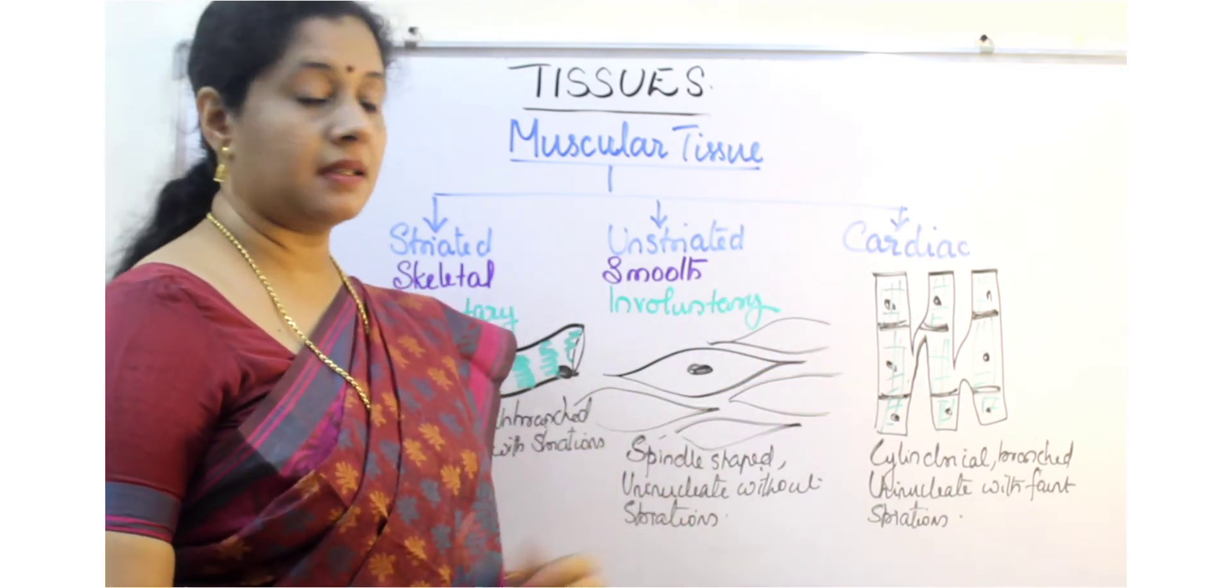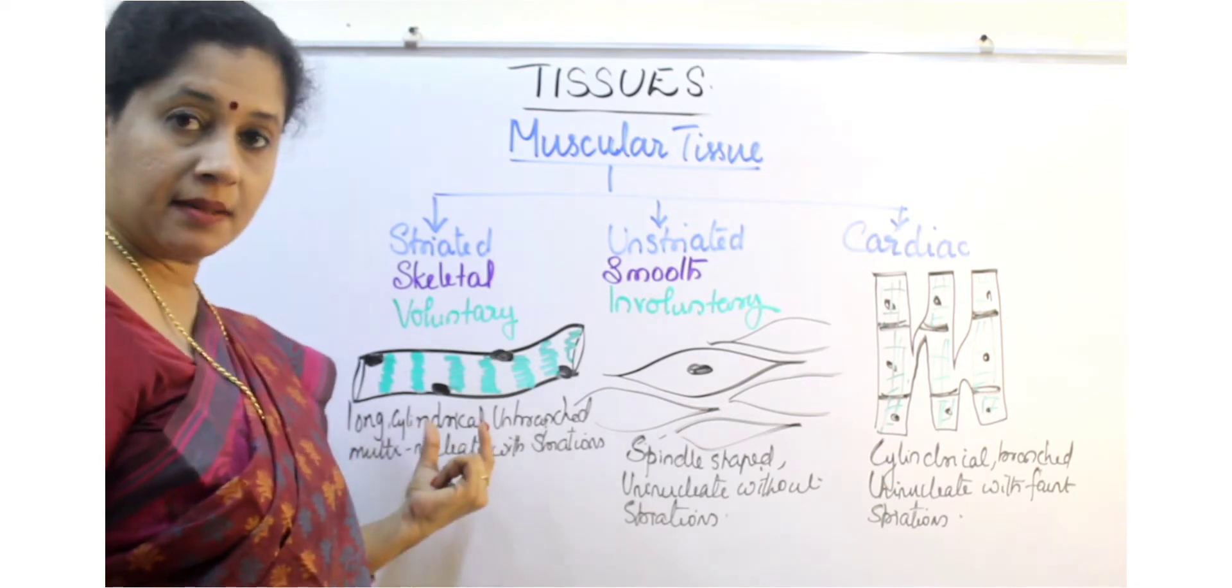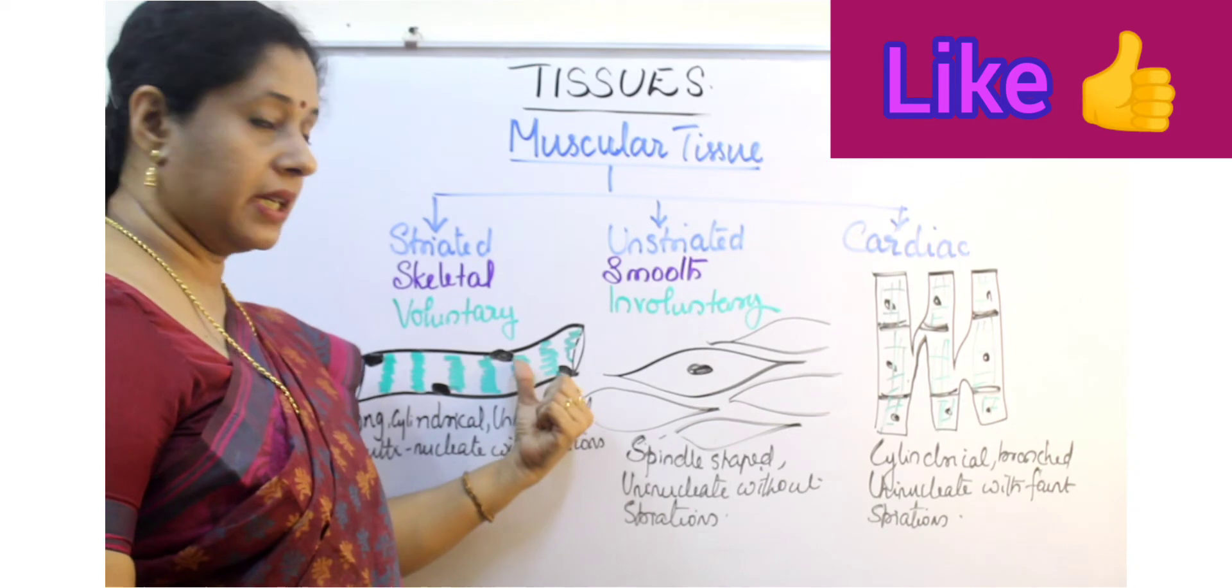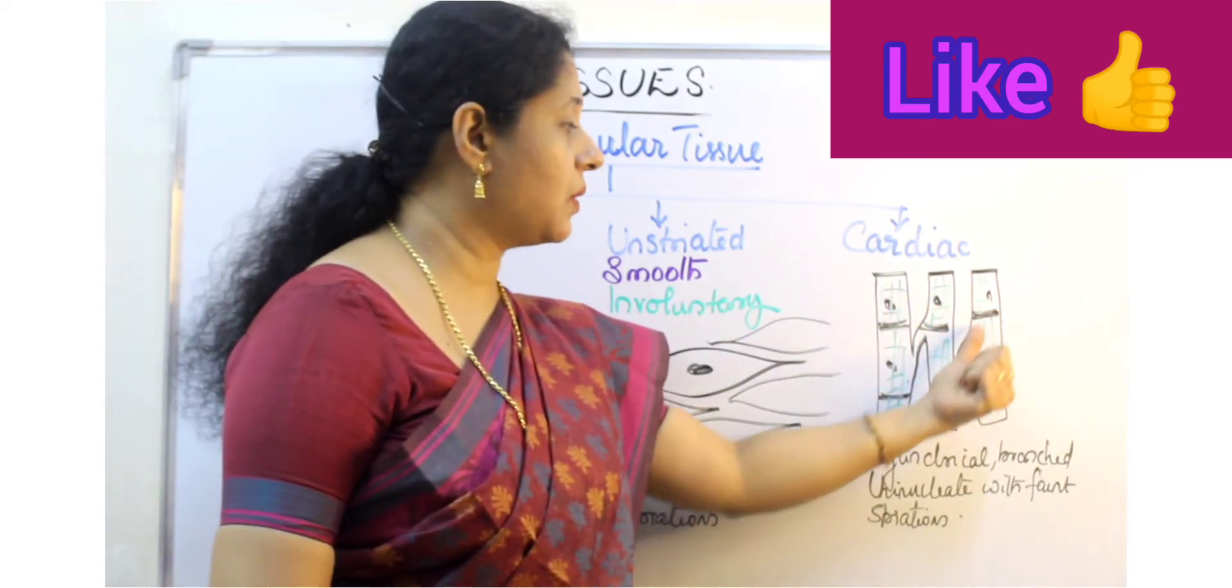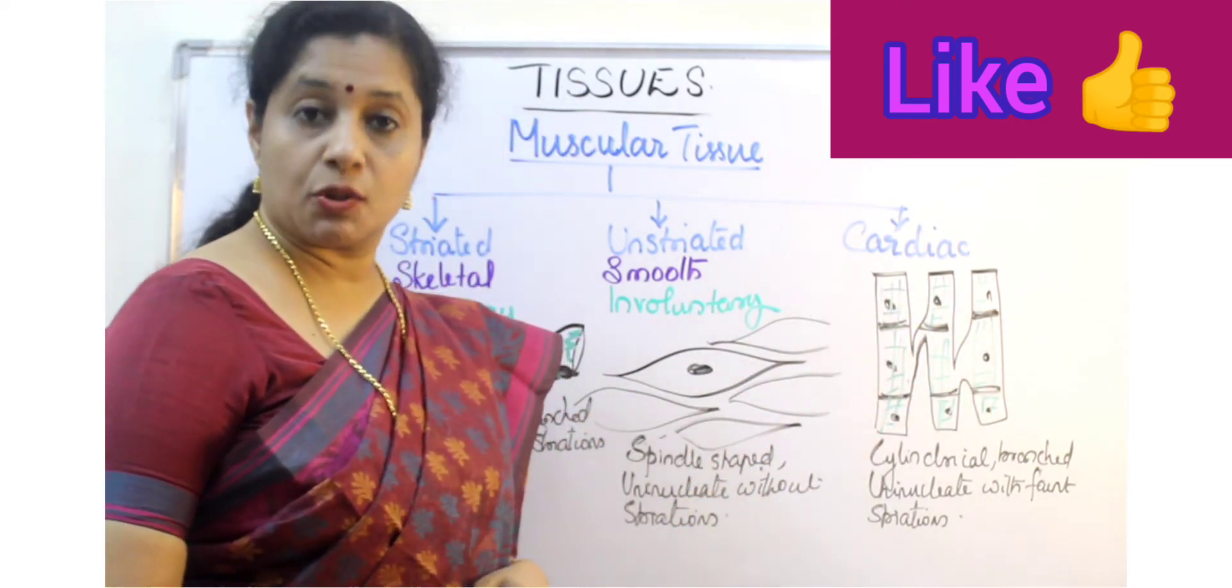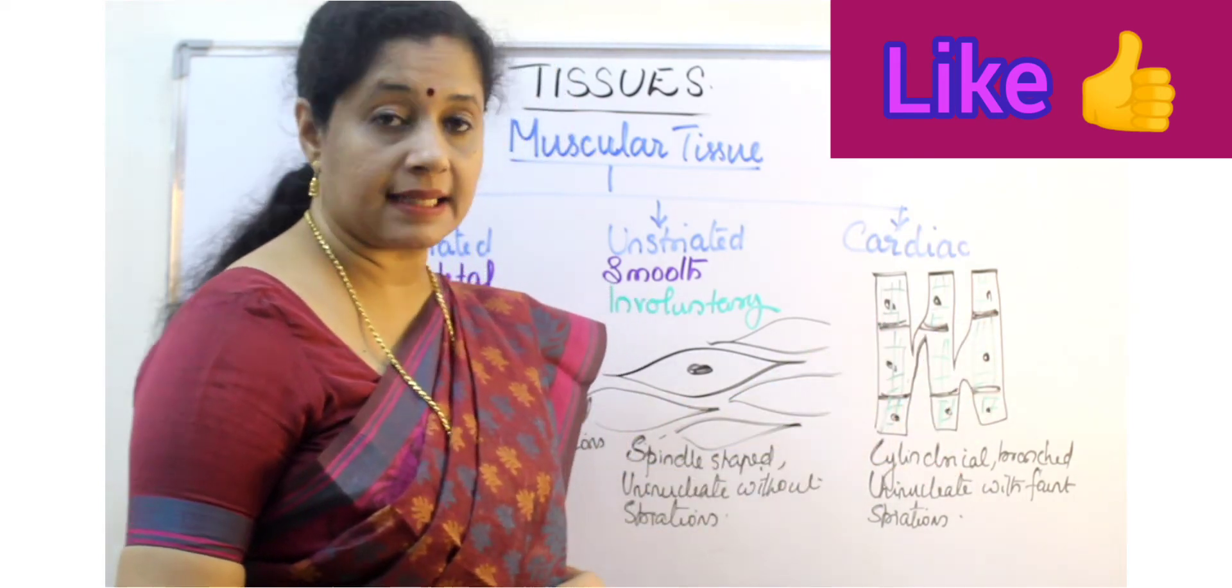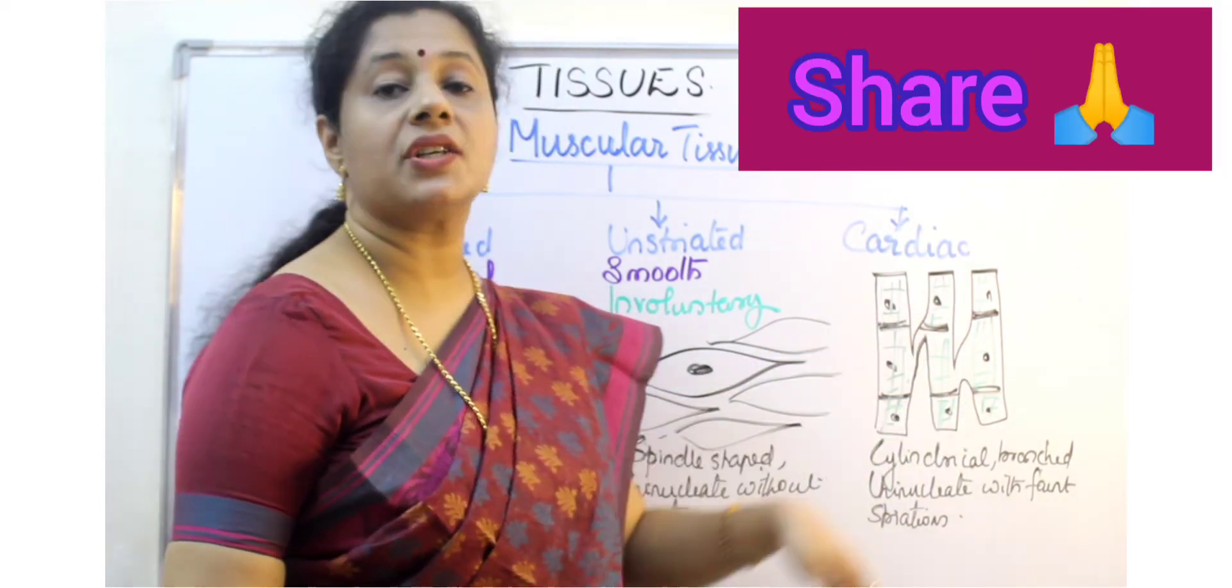Cardiac muscles are cylindrical like this, but it is branched. Here it is multi-nucleate, but these are uni-nucleate like the smooth muscles. They have some discs here, intercalated discs, and they have faint striations on them.